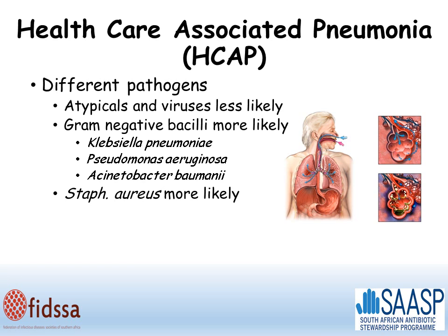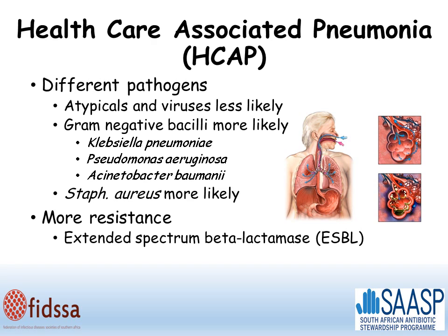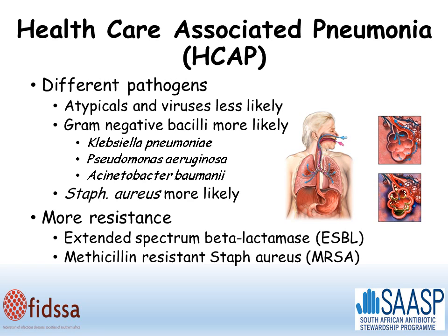In terms of gram-positives, Staph aureus is also more likely. As well as having different pathogens, they are likely to be more resistant. The gram-negatives are more likely to have extended-spectrum beta-lactamases and be resistant to cephalosporins, and the Staph aureus is more likely to be MRSA.